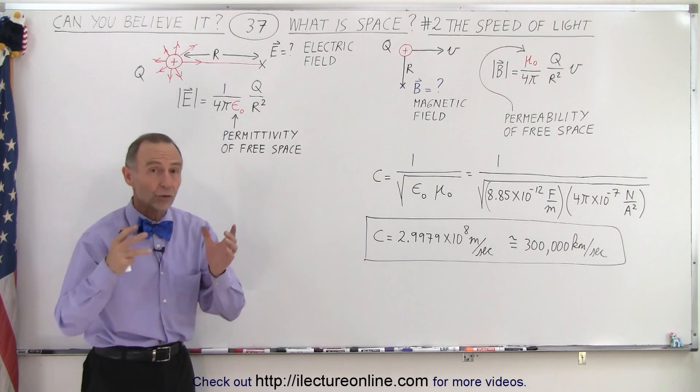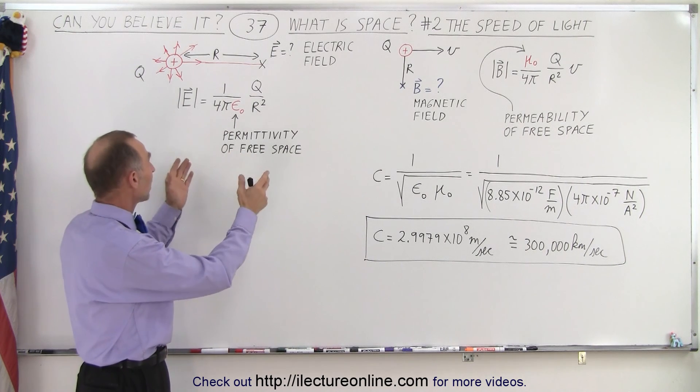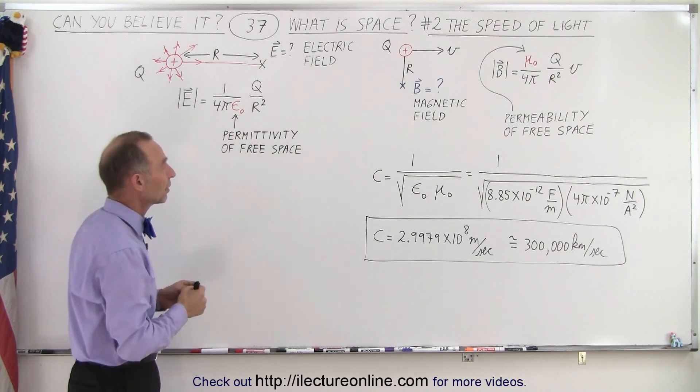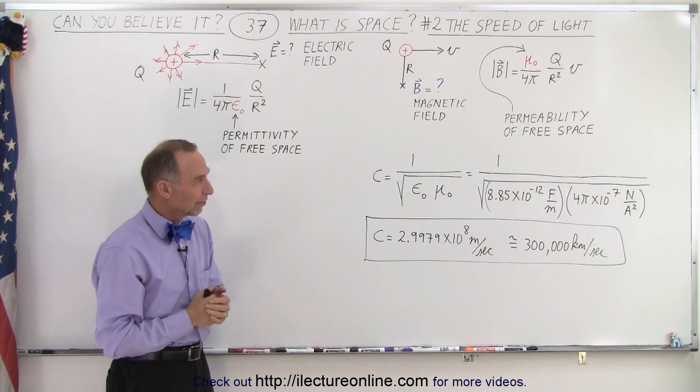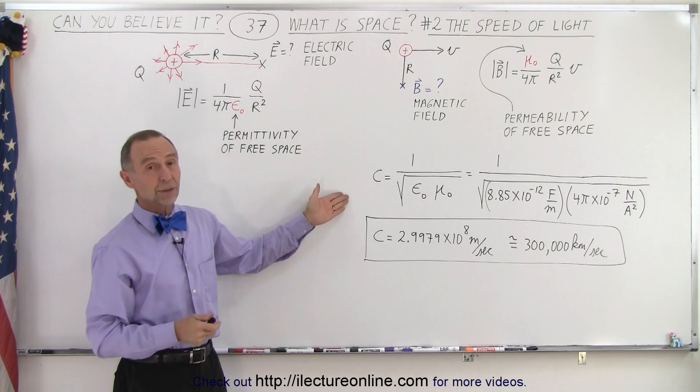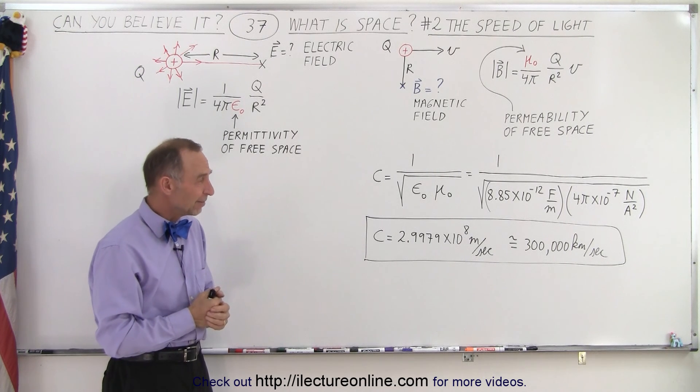The speed of light is controlled by the properties of space that control the strength of the electric field and the strength of the magnetic field. It's absolutely amazing. This was discovered by Maxwell back in about the 1850s.